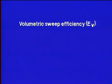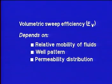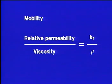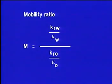The volumetric sweep efficiency depends on three key factors: the relative mobility of the displacing fluid to that of the oil, the injection and production well pattern, and the permeability distribution of the reservoir. Let's consider the first factor. The mobility of any fluid in a reservoir rock is its relative permeability, K sub R, divided by its viscosity, mu. If one fluid is used to displace another, the ratio of the mobility of the displacing fluid to that of the displaced fluid is referred to as the mobility ratio, M.